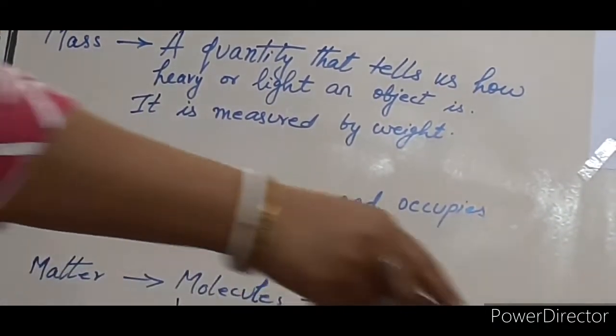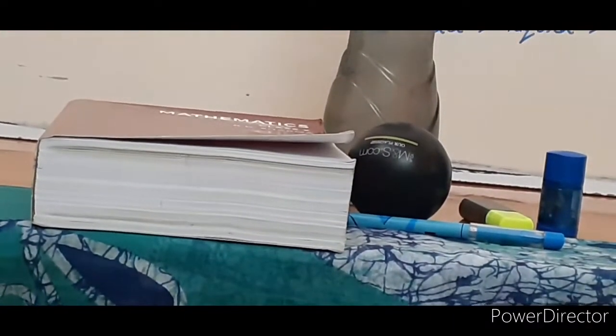For example, this eraser, pen, ball, they are light in weight. But the book, water bottle, this board, they are heavy in weight.